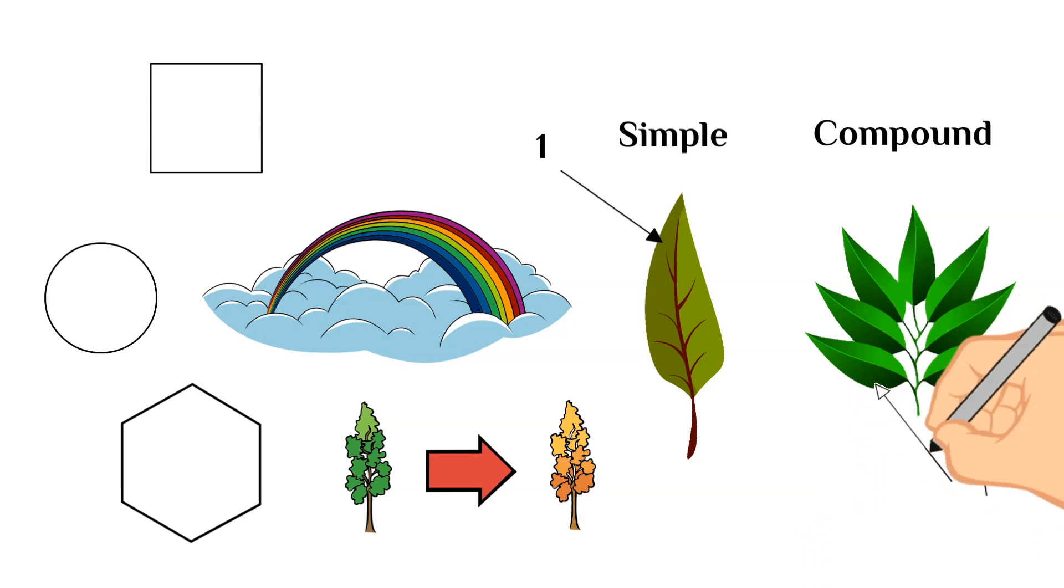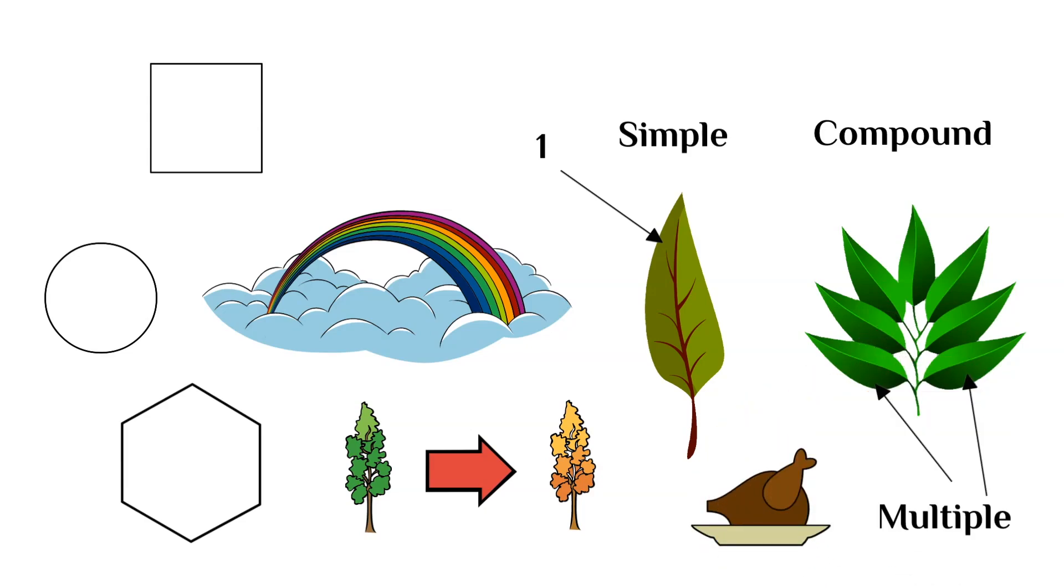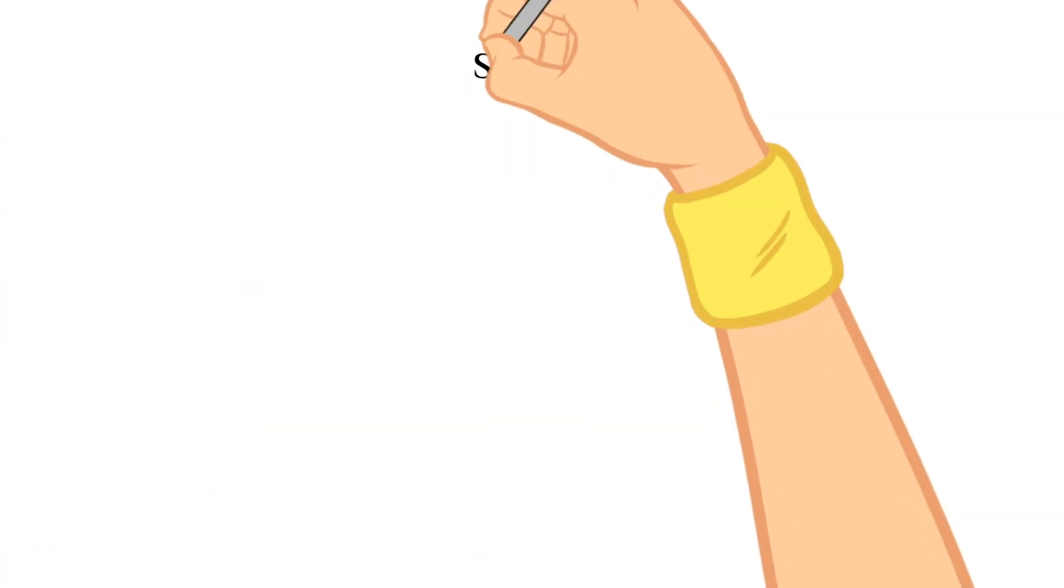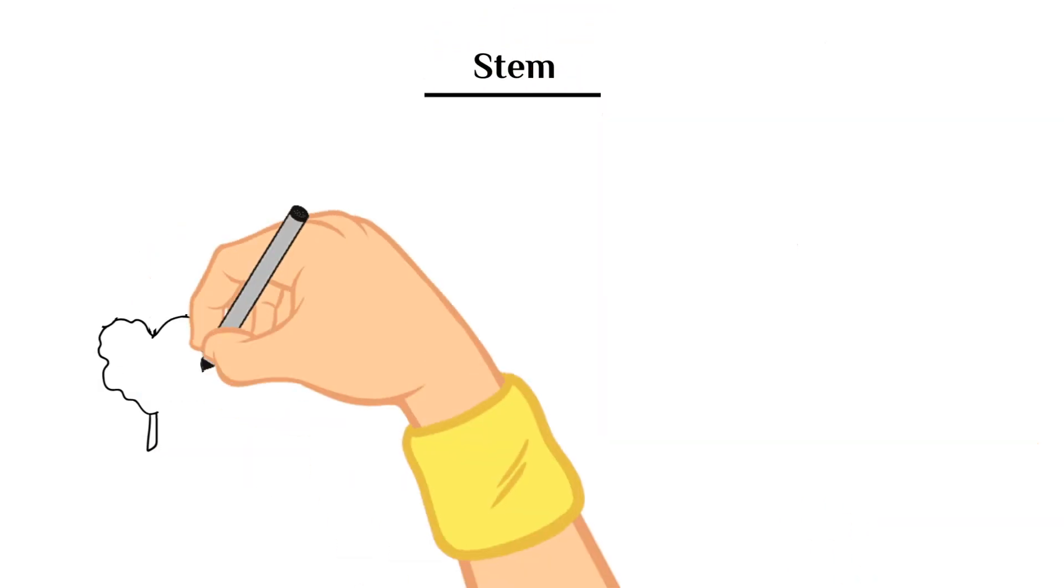Leaves are one of the most important parts of a plant, since they are primarily responsible for making the food, which we talked about earlier. Next up, let's talk about the stem of a plant.